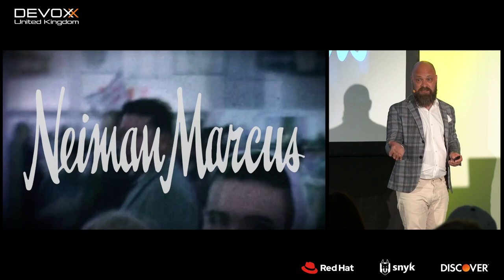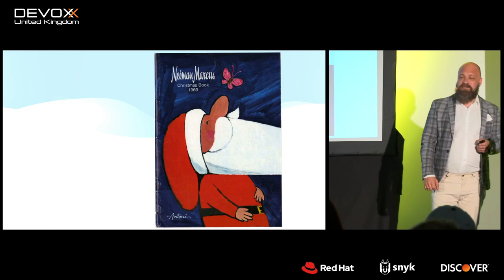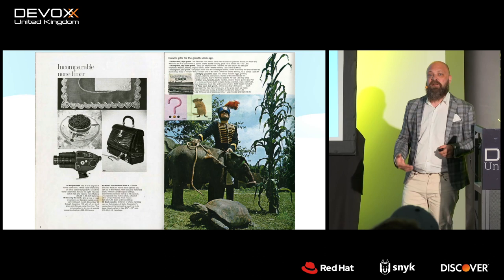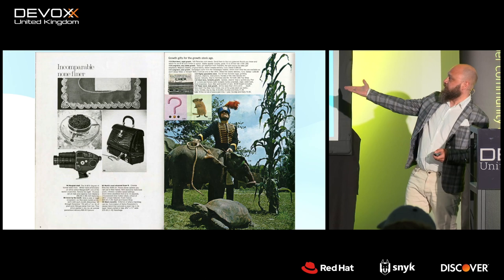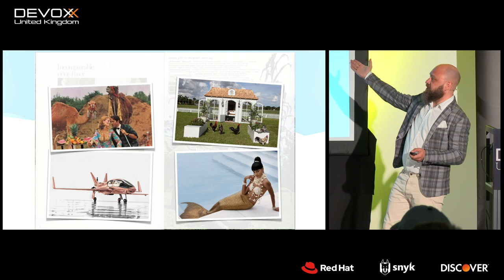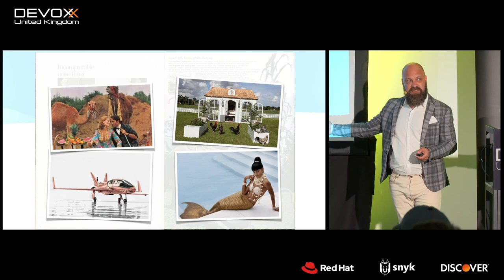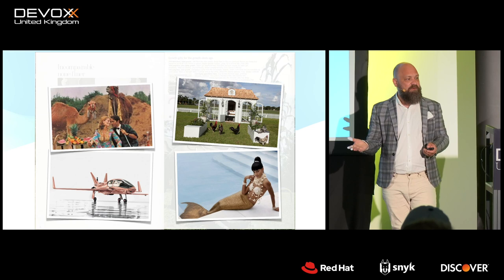It's only 229 days till Christmas. Have you started thinking about your Christmas shopping? I can recommend the Neiman Marcus chain of department stores. Every year they release the Neiman Marcus Christmas Book — this is the 1969 edition. The topic of that year was gifts that keep on growing. You could buy a baby elephant or something fast-growing like a plant. They've had his-and-her sets of camels, a colonial-style chicken coop, a mermaid swimsuit with swimming lessons included, or a rose gold private jet. Something for everyone.